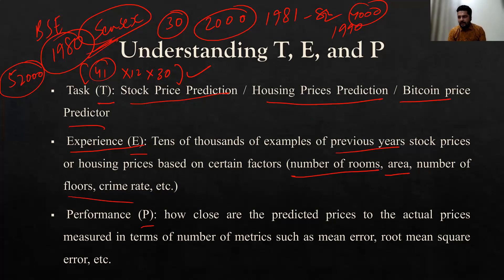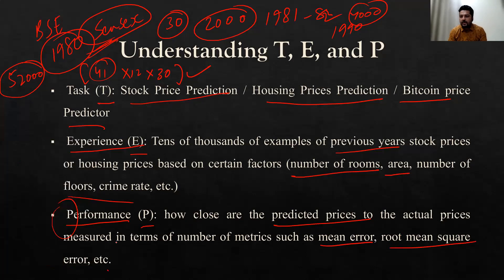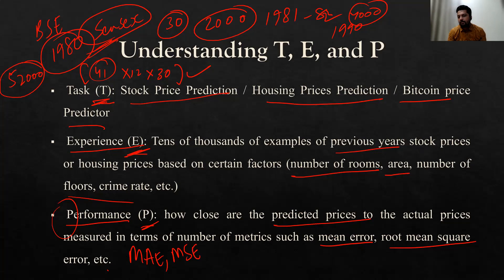Performance P is how close your prediction is to the actual value — that distance between actual and predicted value measures performance. It can be measured by mean error, root mean square error, mean square error, or mean absolute error. These are multiple performance metrics. According to the problem, we take these three values — Task, Experience, and Performance — and derive results. This is how the basic machine learning problem works; you need to have these three things.